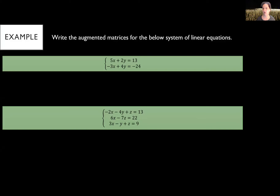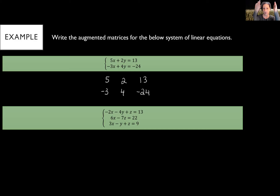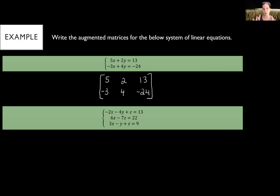Let's practice by turning two systems into augmented matrices. The first one has two equations, so I'll have two rows. Starting with the top equation: I have 5, 2, and 13, so I write those numbers. Then 4 and negative 3, then negative 24. Make sure x's are lined up, y's are lined up, and constants are lined up. Add the brackets around it and that's your augmented matrix. The bottom system has three equations, so we'll have three rows.